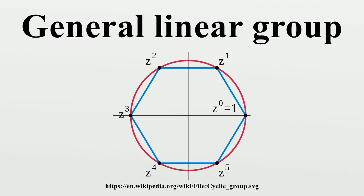The group is so named because the columns of an invertible matrix are linearly independent. Hence, the vectors or points they define are in general linear position, and matrices in the general linear group take points in general linear position to points in general linear position.